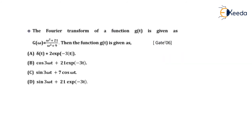Next problem: the Fourier transform of a function g(t) is given as G(ω) = (ω² + 21)/(ω² + 9). Find g(t). Since G(ω) is given and we need g(t), we take the inverse Fourier transform. We know the standard result: FT{e^(-a|t|)} = 2a/(a² + ω²), which is bidirectionally true. In the denominator, 9 = 3², suggesting a = 3.